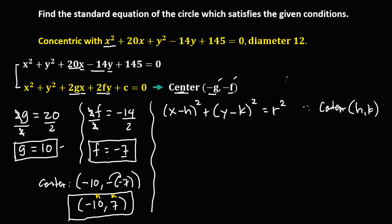To solve for the radius: since we have the diameter, we divide 12 by 2 to find the radius. So 12 divided by 2 is 6. Therefore, the radius is positive 6.